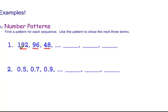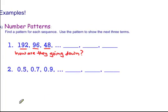The question is, how are they going down? To find out how these numbers are going down, we have to figure out are they going down by subtracting or are they going down by division?